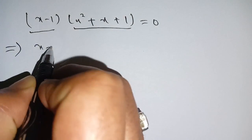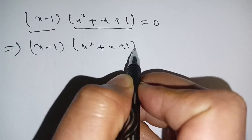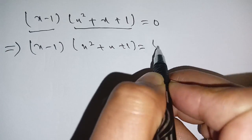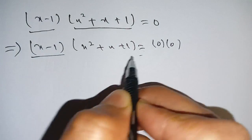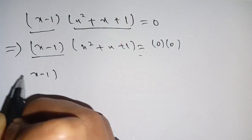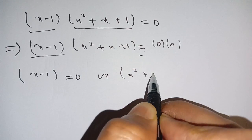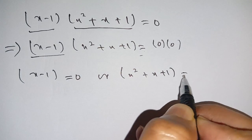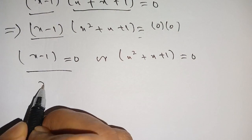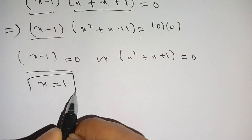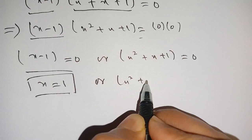Setting x minus one times x squared plus x plus one equal to zero, and equating both terms to zero, we get x minus one equals zero, or x squared plus x plus one equals zero. From the first term we get x is equal to one.